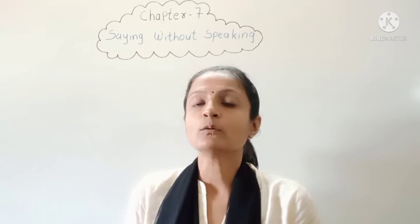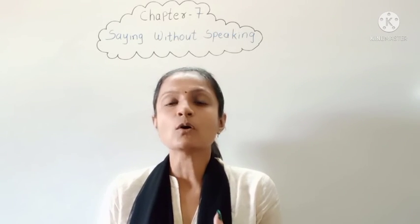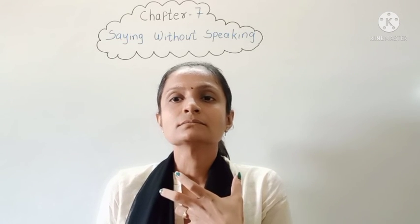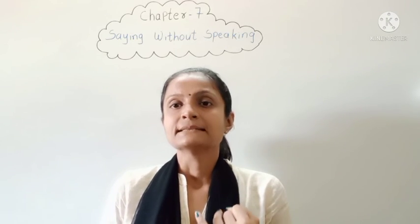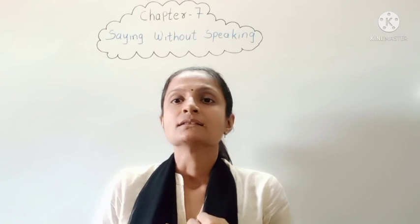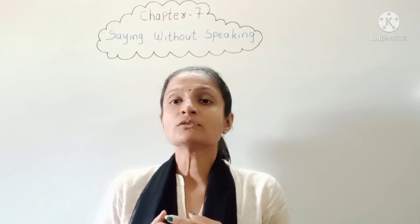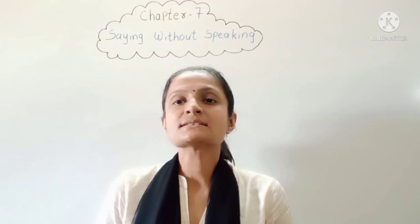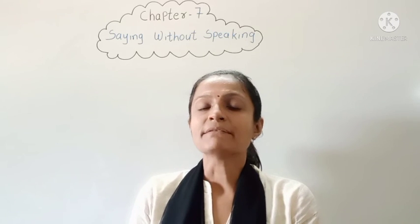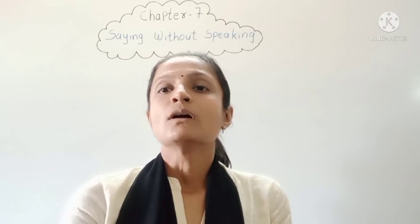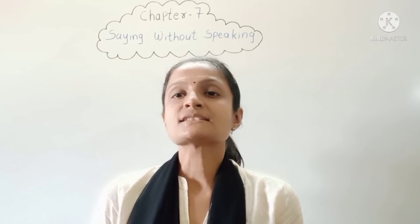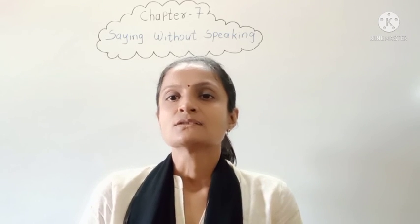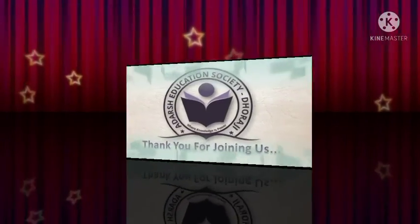In this chapter, we have learnt how we can express ourselves and what we want to say through five ways: first, lip movement; second, through actions; third, through face expressions; fourth, through our eyes; and fifth, through mudras. So now everyone knows how we can understand what another person is feeling or wants to say — just by looking at their face or different actions.